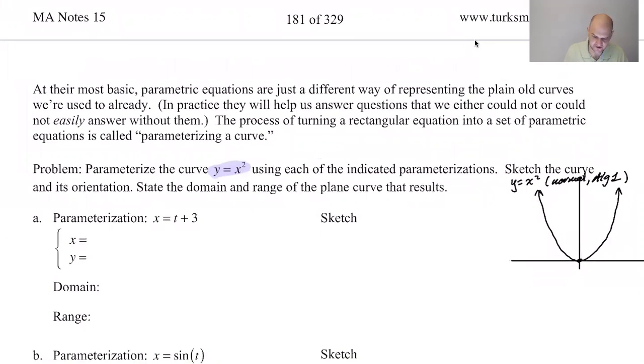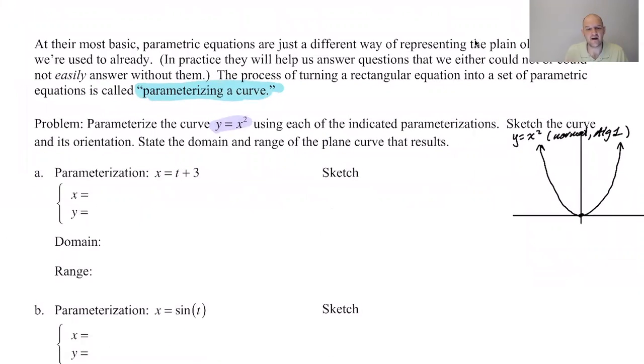The process of writing parametrics or turning a curve into a set of parametrics is called parameterizing a curve, parameterizing. Some spellchecks do not like that word. It doesn't really matter. It's a word. It's a math word for sure. Math verb, I guess. So we're going to parameterize this curve.